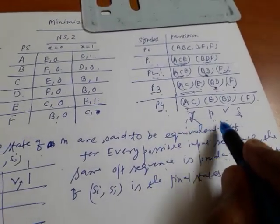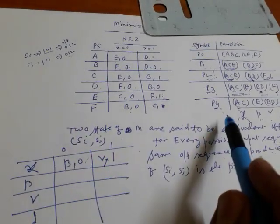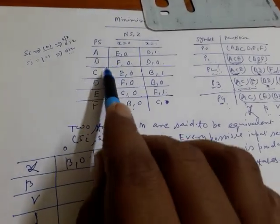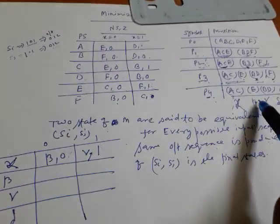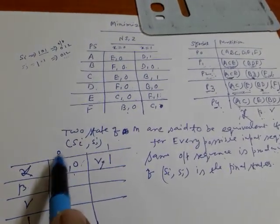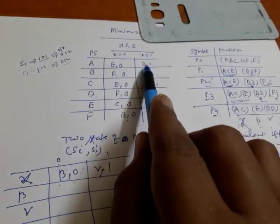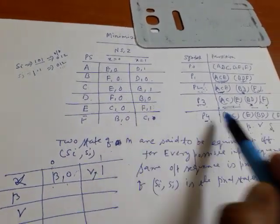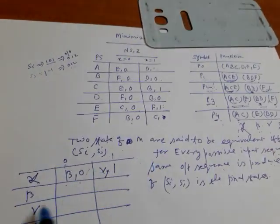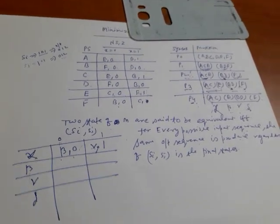Now let's design the minimized state table. Alpha represents A or C. For input 0, A or C goes to state E, and E means beta — so write beta. The output for input 0 is 0. For input 1, taking A goes to D, taking C goes to D, and the mapping goes to B — so D or B means gamma. The output for input 1 is 1. In this way you can write all the states for the remaining ones and your minimization will be complete.